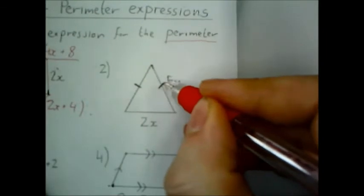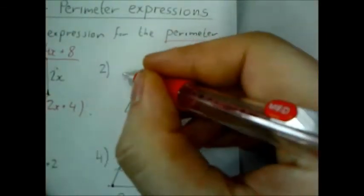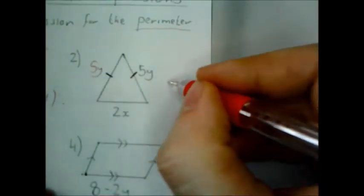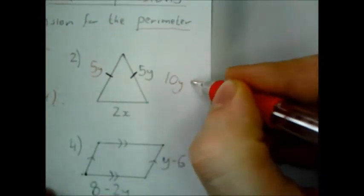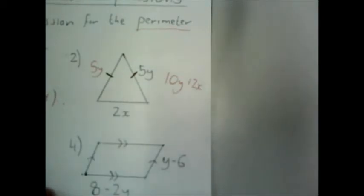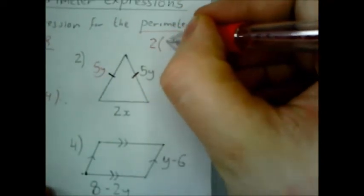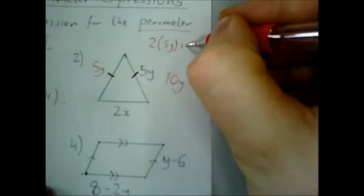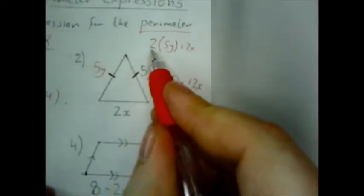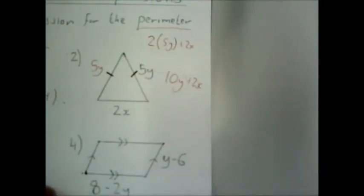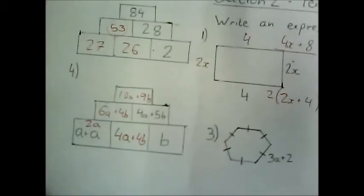OK. Question 2. I've got these lines here which mean they're the same length. So this is also 5y. So this is simply going to be 5y plus 5y plus 2x. So that's going to be 10y plus 2x. OK. If you wanted you could have also done 2 lots of 5y plus 2x. And then 2 lots of 5y is 10y. But it both gives you the same answer. Just a different way of working it out.